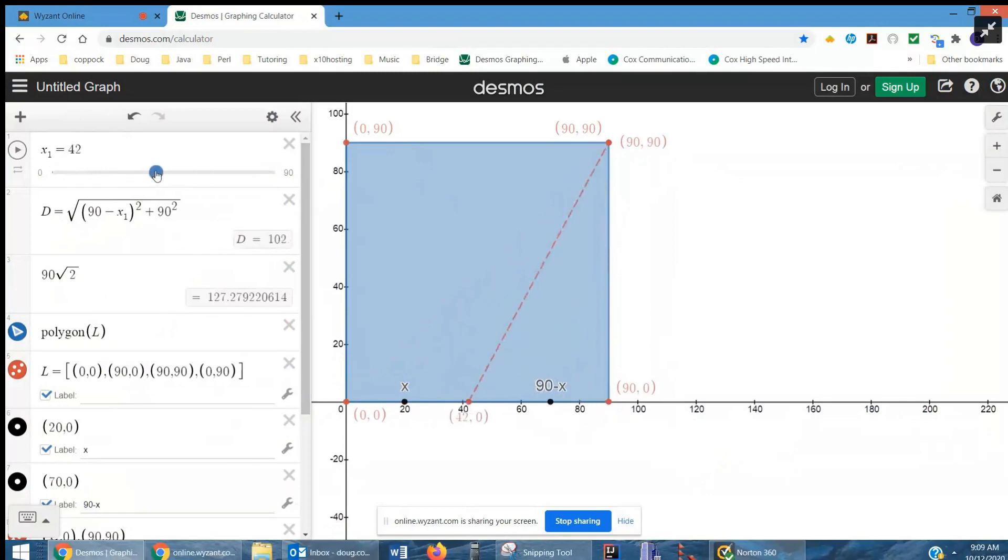We're supposed to find how fast the distance between the runner and second base is changing at the time when x is 45. And there it is, the distance actually is 100.623.